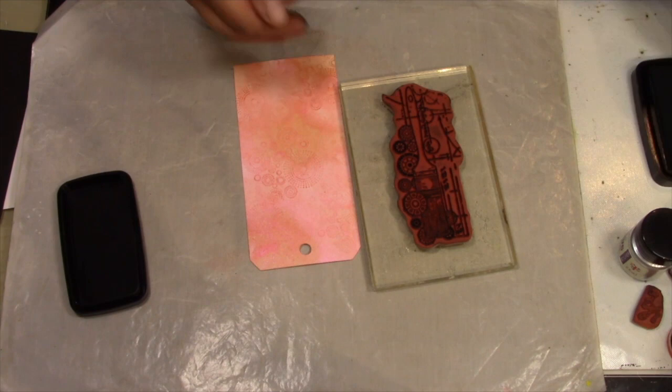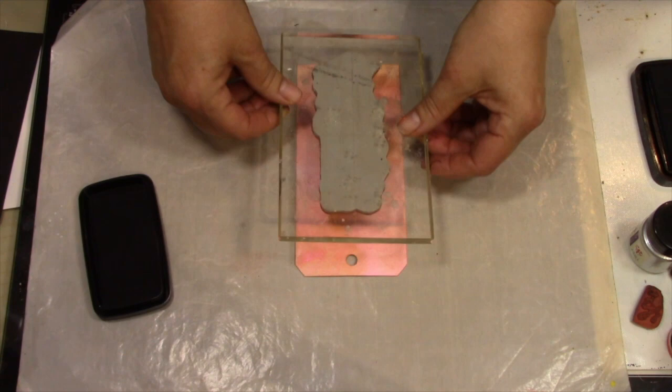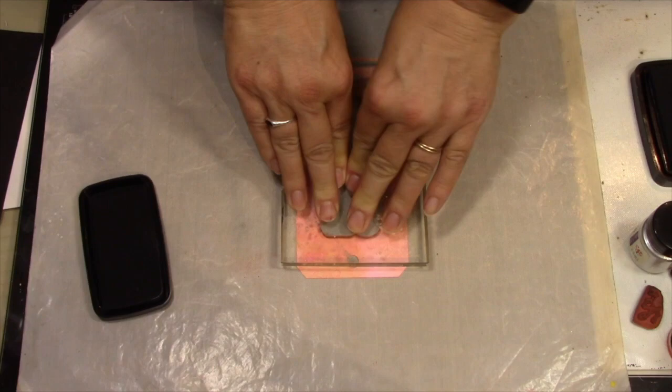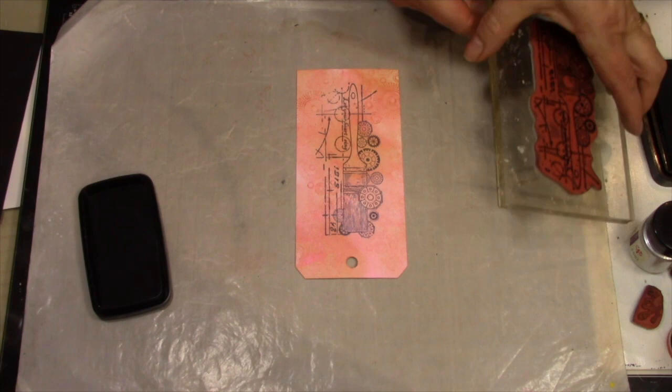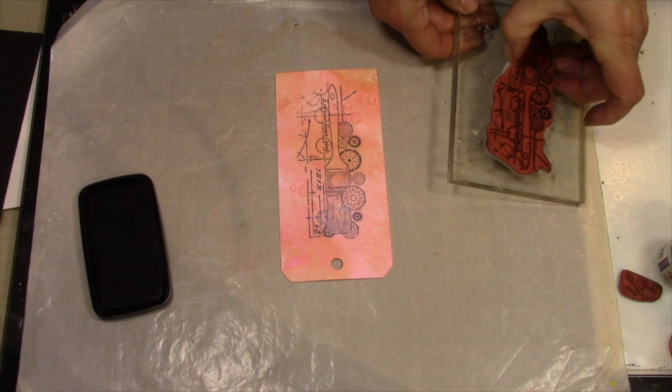I'm inking up the stamp with the VersaFine Claire to give a nice dark image and stamping it into the center of my tag. Can you watch this? Isn't that beautiful? Absolutely stunning. I love these sets, they're beautiful.